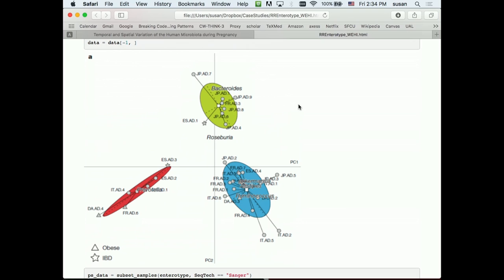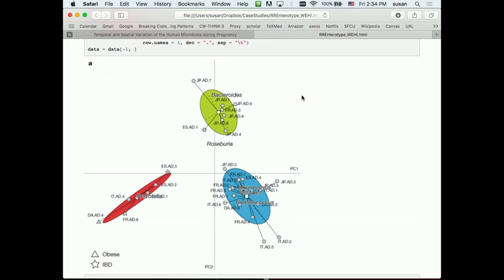And on this example you see I have this picture. This was published in Nature. And the conclusion of the paper was there are three types of microbial ecologies, like blood types, for the bacteria in the gut.